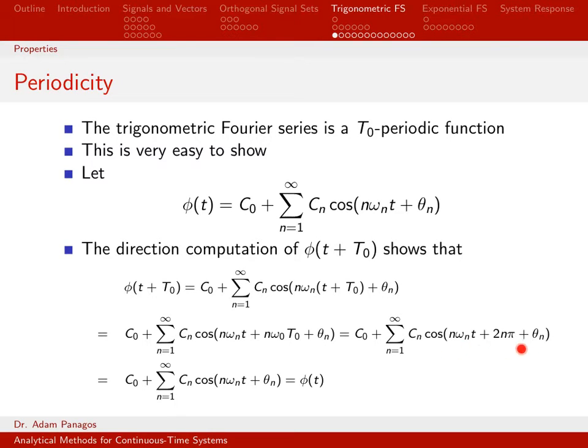Cosine of an argument adding 2 pi doesn't do anything. Adding N times 2 pi doesn't do anything. So this term right here I can remove without changing anything. This final line of math is the exact equation phi of T. So we've actually ended up back at phi of T. So a direct computation shows that phi of T plus T-naught is equal to phi of T.